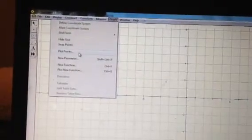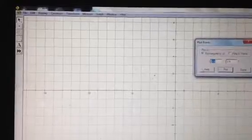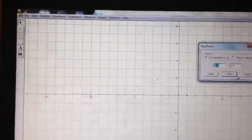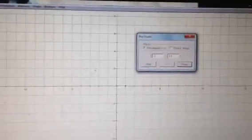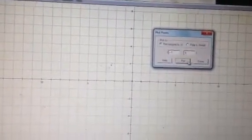Let's go to graph plot points. We'll start off with a simple trapezoid here at negative 5 and 5. Negative 5, positive 5, plot.